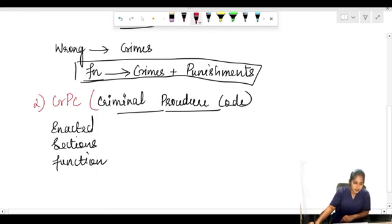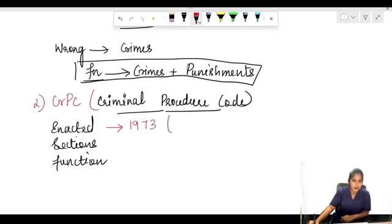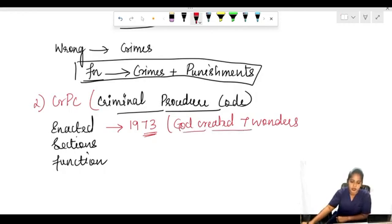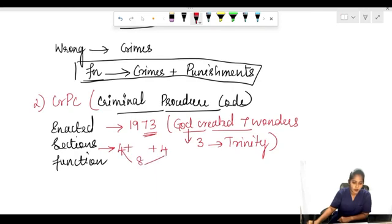It was enacted in the year 1973. After 18, I consider this is 19, and 73 we can remember as God created seven wonders, or the seven wonders have been created by God. So seven is represented by God, which is three representing the trinity. 1973.